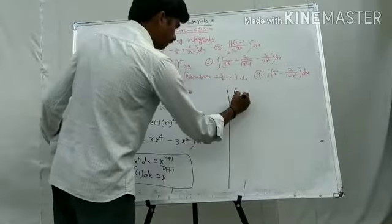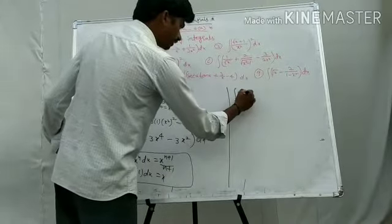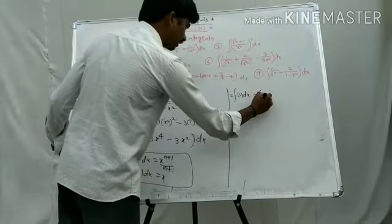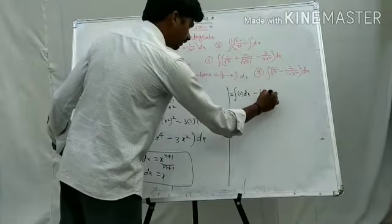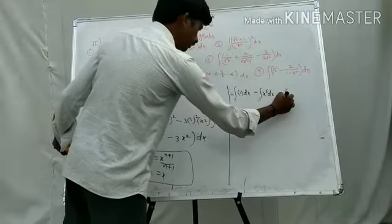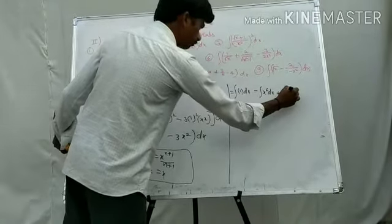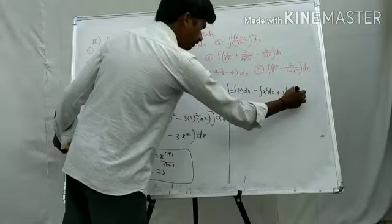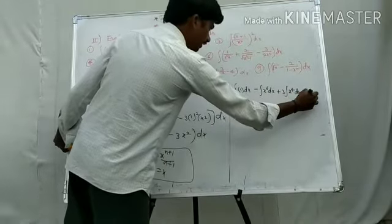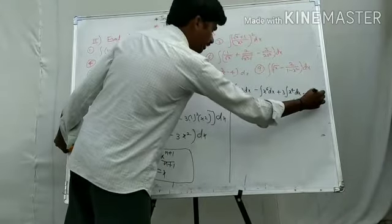Integral of 1 dx equals x, minus integral of x to the power 6 dx, plus 3 times integral of x to the power 4 dx, minus 3 times integral of x squared dx.